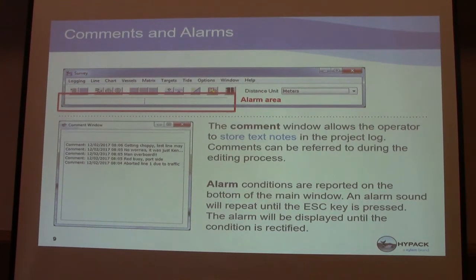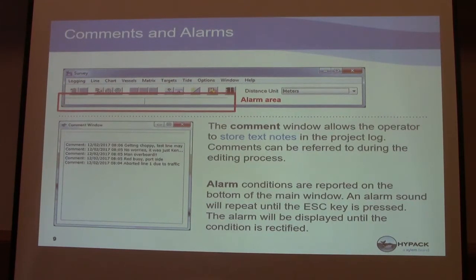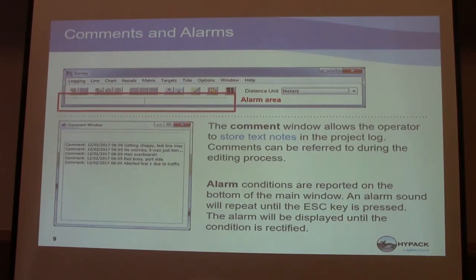The comment window allows the operator to store text notes in the project log — comments you want to enter while you're surveying. When you're going through the editing process, you can see those comments: an anomaly or anything you want to note at a particular time in the survey. Alarm conditions are reported on the bottom of the main window. An alarm sound will repeat until the escape key is pressed, and the alarm won't be displayed until the condition is rectified.